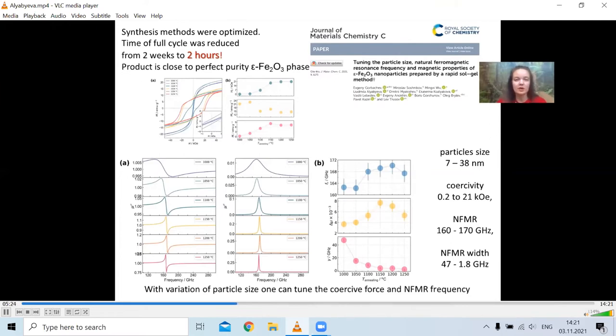And by variation of the growth processes and some growth conditions, we were able to tune both, of course, coercive force from soft values to hard magnetic values of 20 kOe. And also, we are able to tune both the position of the natural ferromagnetic resonance line in the region of 160 to 170 GHz and the width of the line.